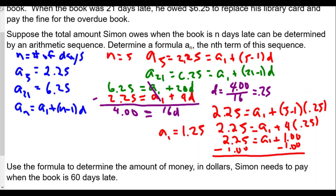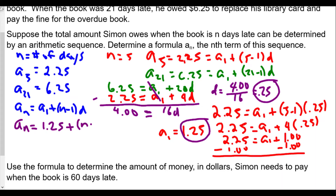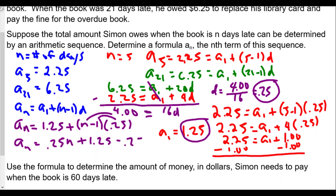Now that we have our d value and our a1 value, we can substitute into our formula. A sub n equals 1.25 plus n minus 1 times 0.25. Distributing the 0.25 gives us a sub n equals 0.25n plus 1.25 minus 0.25, which simplifies to a sub n equals 0.25n plus 1. That's the formula — the nth term of the sequence.